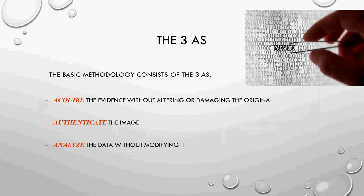There are three important A's in the investigating part: acquire, authenticate, and analyze. Whenever you acquire evidence, we do not allow it to be altered or damaged — this is known as data integrity. Then we authenticate the image, verifying whether the backup created matches the original. Then we need to analyze the data without modifying it, because if any part of the data is modified, the whole image would be affected. Data integrity is a critical part of cyber forensics.